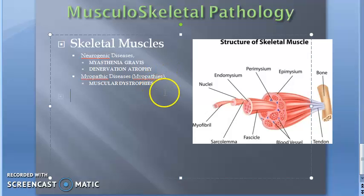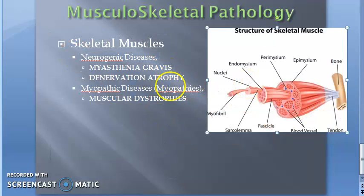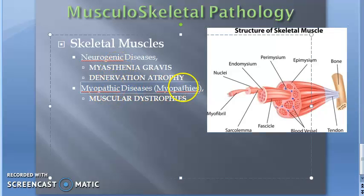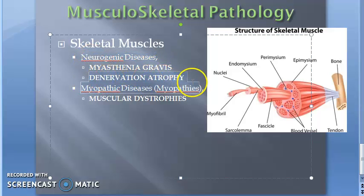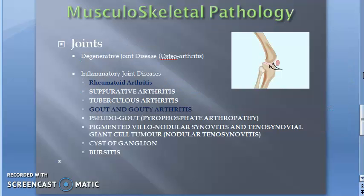Moving on to skeletal muscles: the important topics are neurogenic diseases and myopathic diseases. Under neurogenic, you have myasthenia gravis and denervation atrophy. Under myopathic diseases, you have muscular dystrophies and myopathies. However, none of these have been asked in the exam as of now.